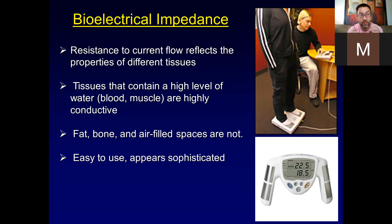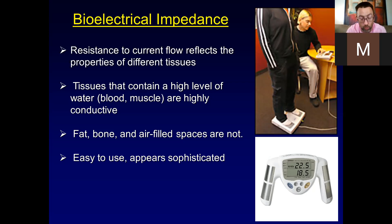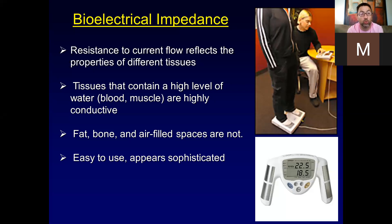You stand on a platform or grab a handheld device, and it runs a very mild imperceptible electrical current up one foot through your body and out the other foot, or from one hand to the other. The slower that current moves through your body, the more adipose tissue you have. Based on your age, height, and weight, it estimates limb length and calculates your percent body fat from the time it takes for the current to travel.